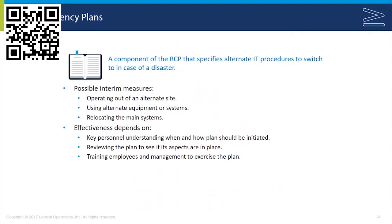Another plan that is a component of the BCP is an IT contingency plan. It specifies alternate IT procedures to switch to in case of a disaster. When faced with an attack or disruption of service, some possible interim measures include operating out of an alternate site, using alternate equipment or systems, or relocating the main systems.